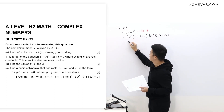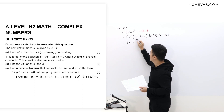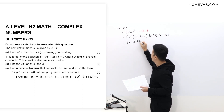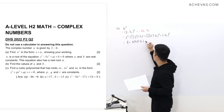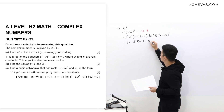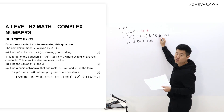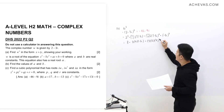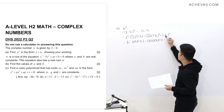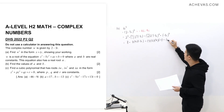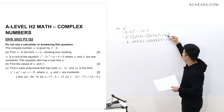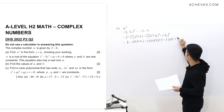2 to the power of 3 is 8. 3 choose 1 is 3, and 2 squared is 4, with the remaining factor still being negative 3i. 3 choose 2 is 3, and we have 2. Negative 3 squared is 9 and i squared is negative 1. Then negative 3 to the power of 3 is negative 27, and i to the power of 3 gives negative i.